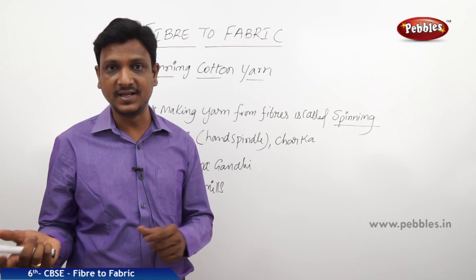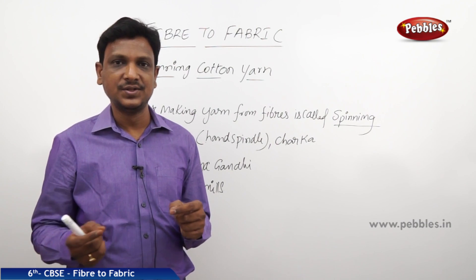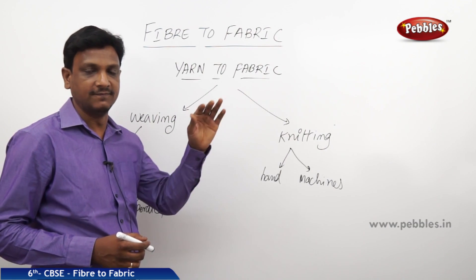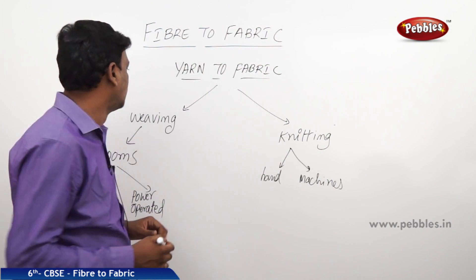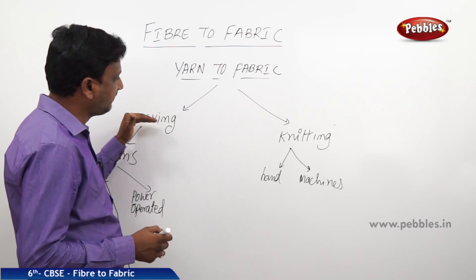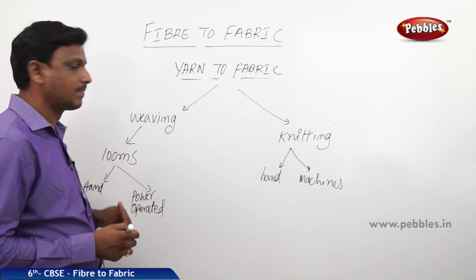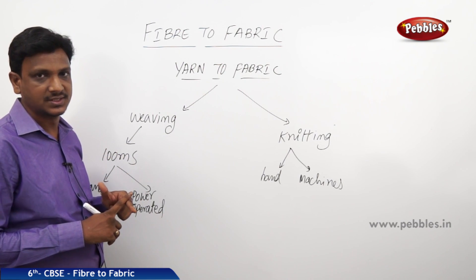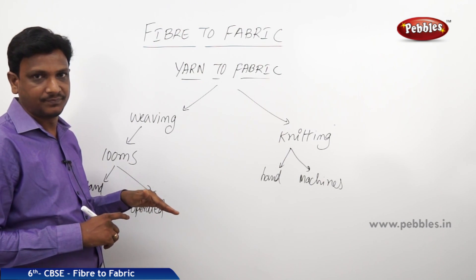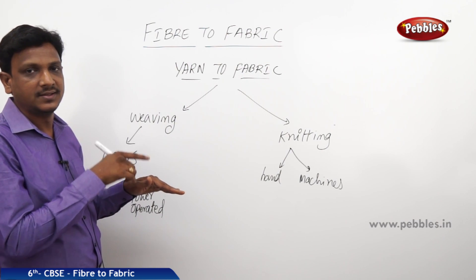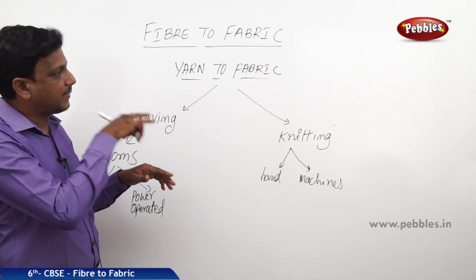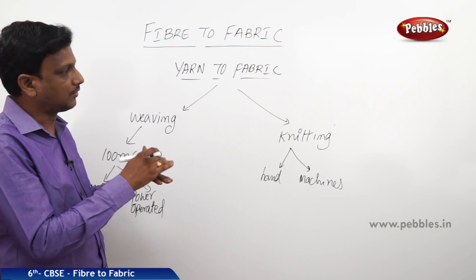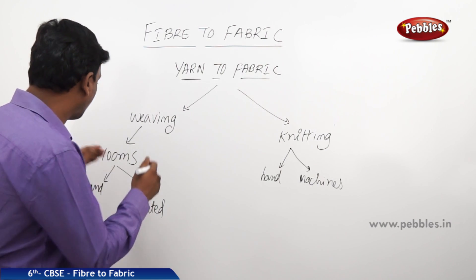To get fabric, the yarn has to be made into fabric. This process is called weaving. There are two processes: weaving and knitting. In weaving, two yarns run in opposite directions — one set runs parallel (vertical) and another set runs horizontally. These parallel and horizontal threads are weaved one after the other to make the cloth. This process is done by looms.